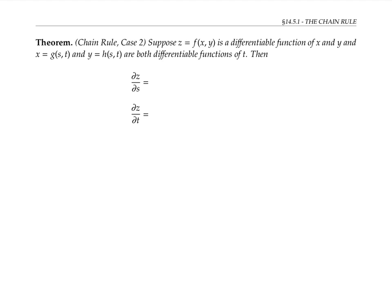There's also a version of the chain rule when z is a differentiable function of more than one variable, here x and y, and those variables x and y are themselves differentiable functions of more than one variable, here s and t.